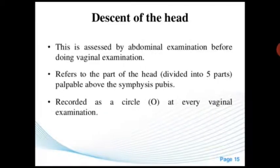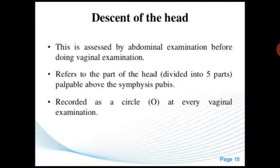Descent of the head is assessed by abdominal examination before doing vaginal examination. It refers to the part of the head palpable above the symphysis pubis, divided into five parts, and recorded as a circle at every vaginal examination.